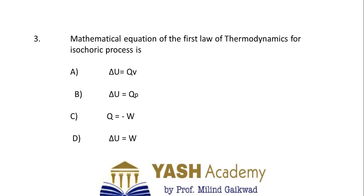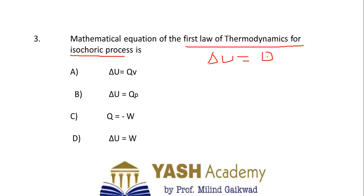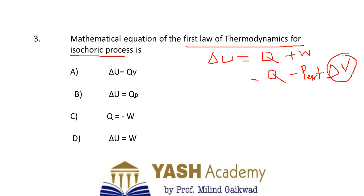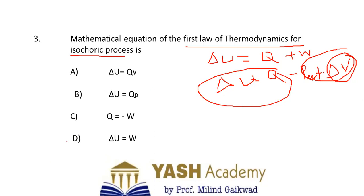Third question: mathematical equation of the first law of thermodynamics for an isochoric process. Isochoric means same volume, i.e., volume remaining constant. According to the first law, delta U = Q + W, where W = −P_ext × delta V. Since delta V = 0, W = 0, so delta U = Q. Correct answer is A.